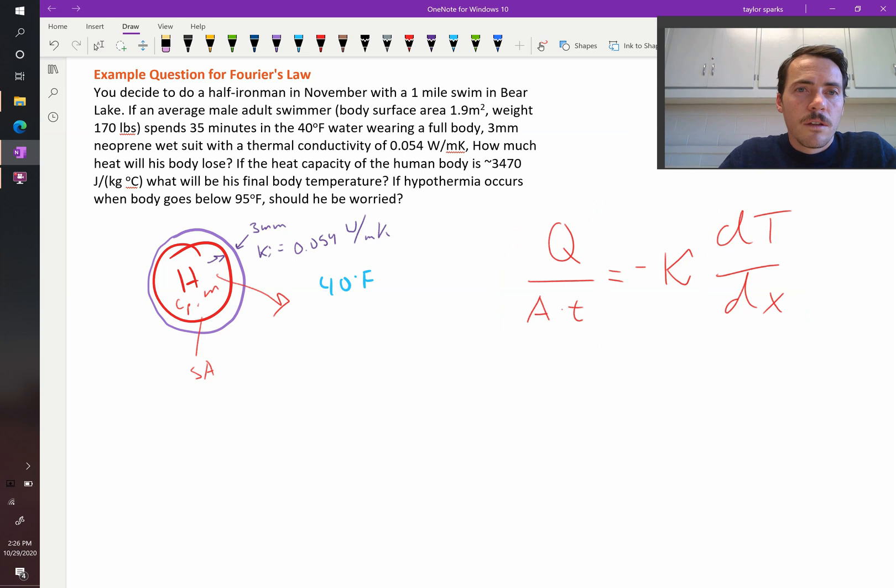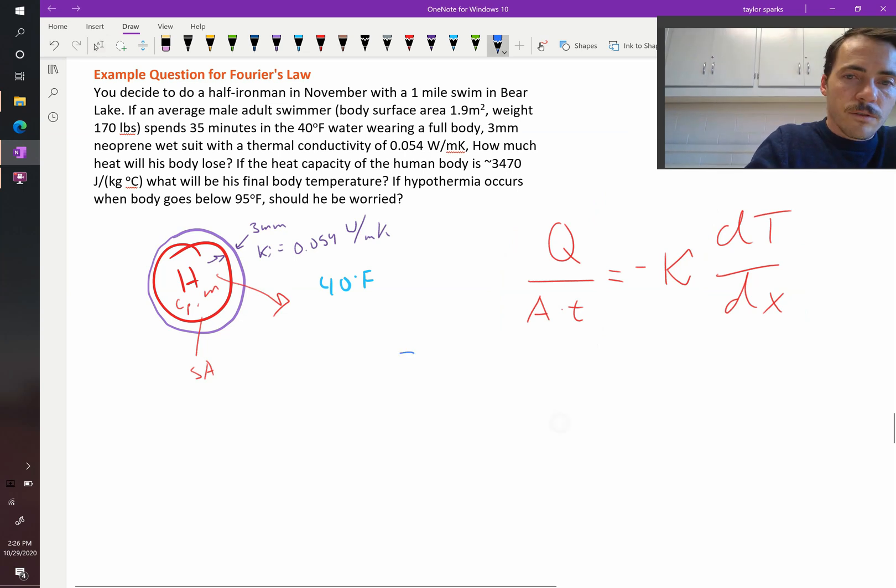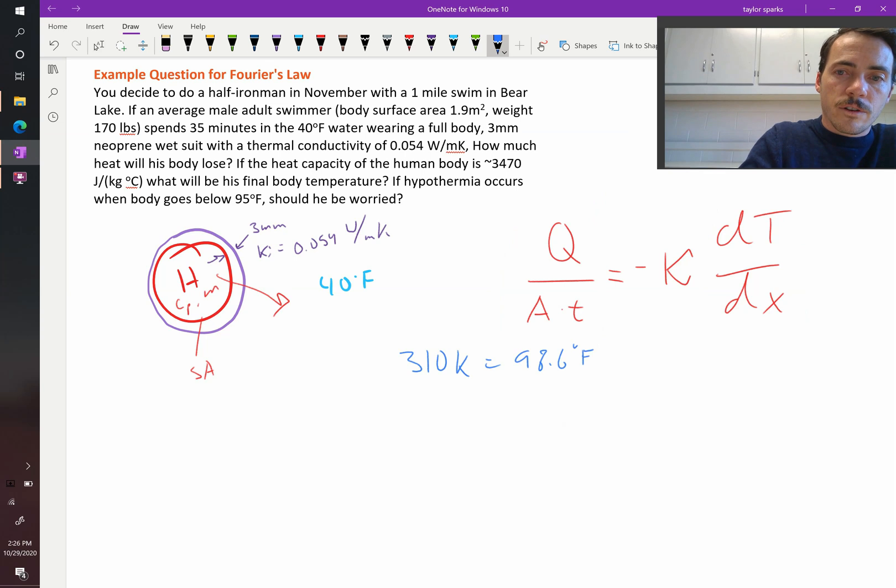So let's start plugging in some numbers. So 98.6 degrees Fahrenheit is 310 degrees. So 310 Kelvin is equal to 98.6 degrees Fahrenheit. The water, if it's at 40 degrees Fahrenheit, I'm going to put this in Kelvin, that's equal to 277 Kelvin about. Okay, so let's calculate how much heat gets lost.